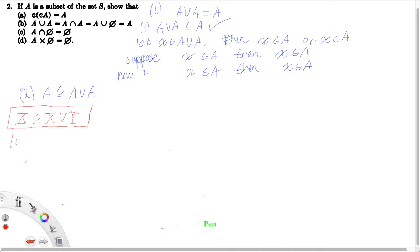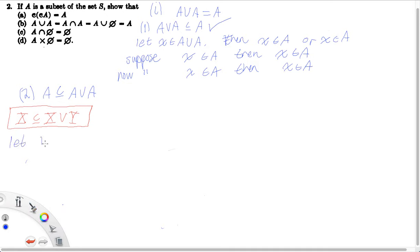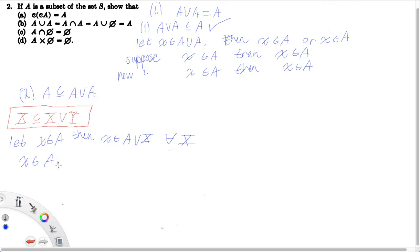Leveraging this fact, let X be in A. Then X is in A union X-bar, for any set X-bar — where the bars on top indicate a set. So X must be in A union A. And we're done with the first part: showing that A union A is equal to A.